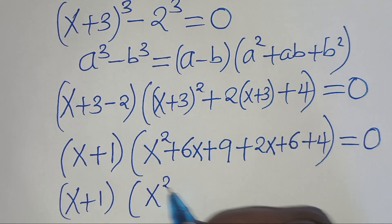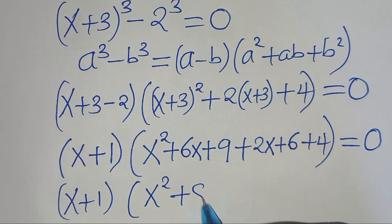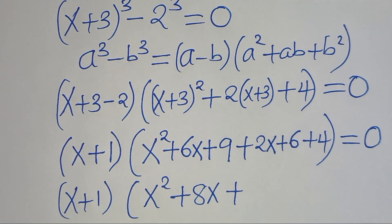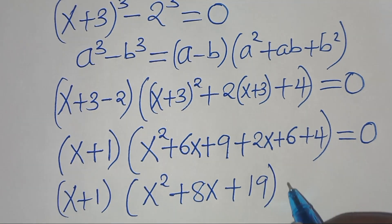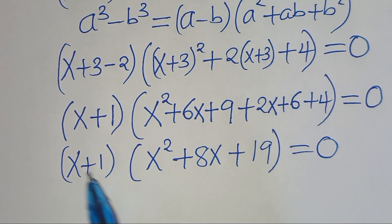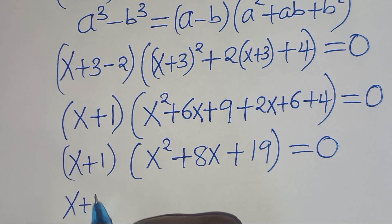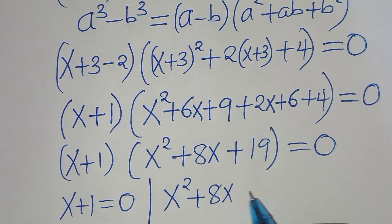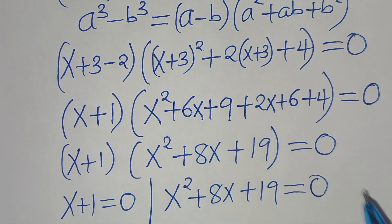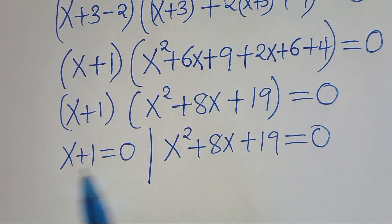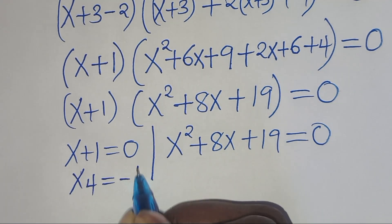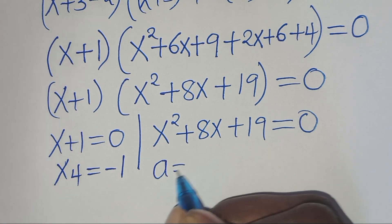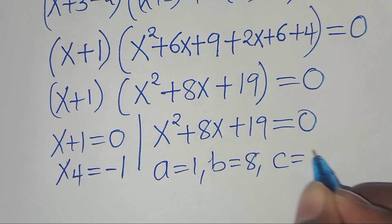Expanding: x squared plus 6x plus 2x gives 8x, and 9 plus 6 plus 4 gives 19, so we have x plus 1 times x squared plus 8x plus 19 equal to 0. From the first part, x4 is equal to minus 1. The second part is a quadratic equation with a equal to 1, b equal to 8, and c equal to 19.